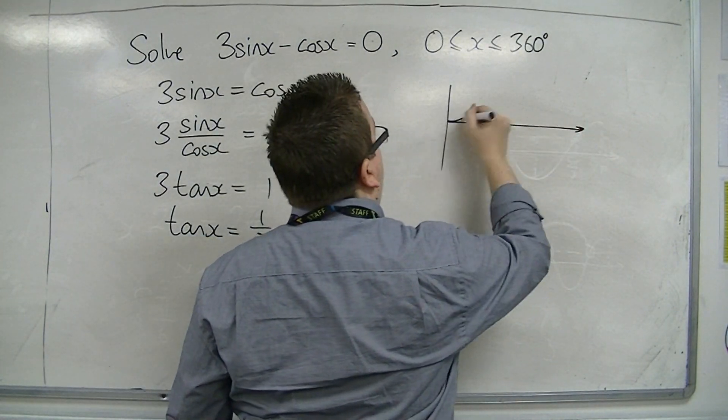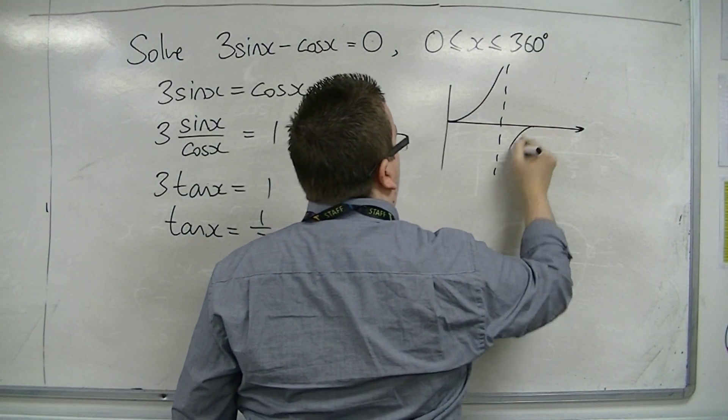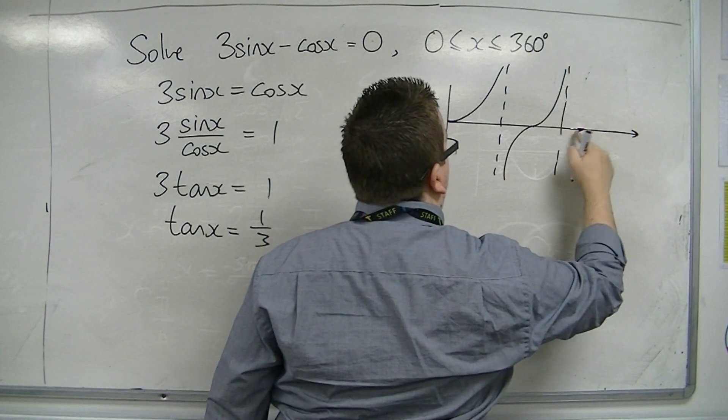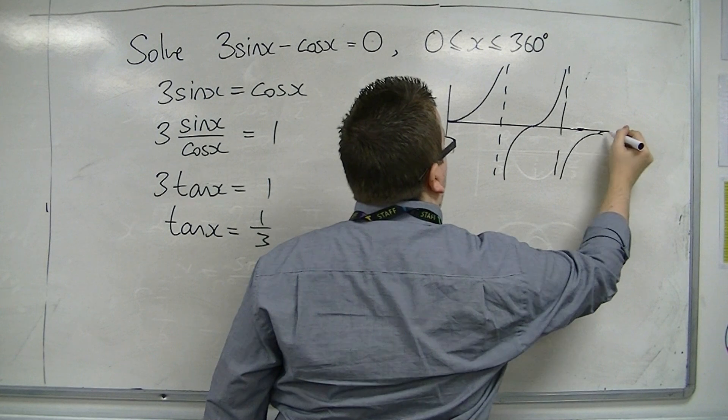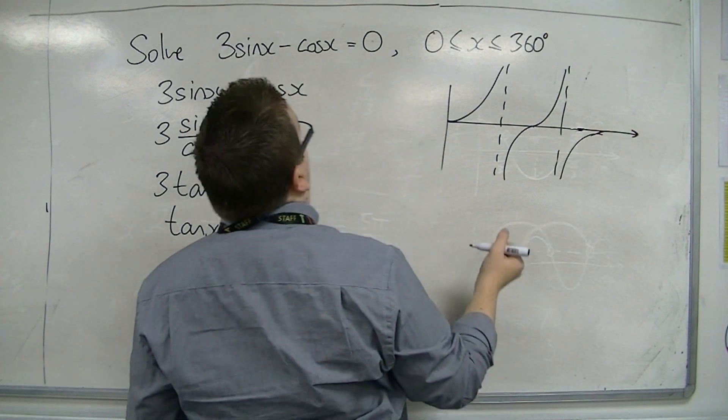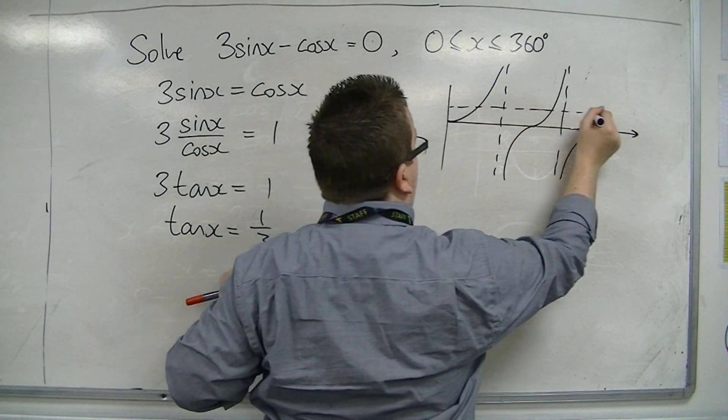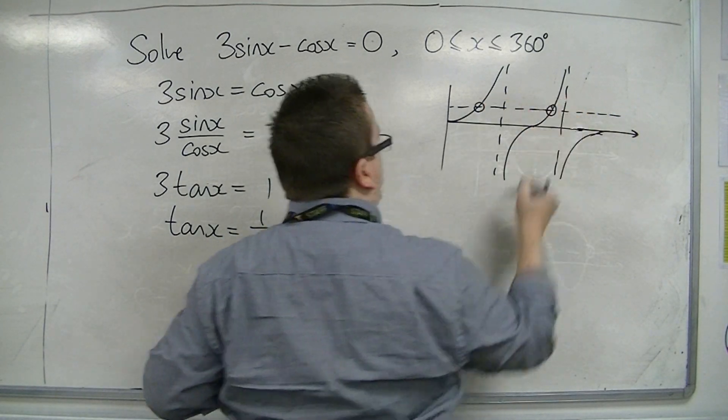Nice sketch of tan between 0 and 360. Now 1/3 is going to intersect the curve there and there, so twice.